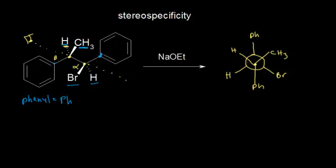Just like we did in the last video, we need to look at it from a slightly different viewpoint in order to help us with this mechanism. We're going to make this proton the top — that hydrogen is going to be at the top — and we're going to make this bromine the bottom. So we're going to redraw this Newman projection. I'm not going to show any rotation of any bonds; I'm just going to change your viewpoint. So we're going to put this hydrogen at the top of our Newman projection, and that hydrogen is connected to this carbon.